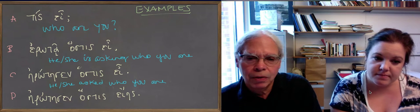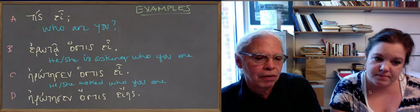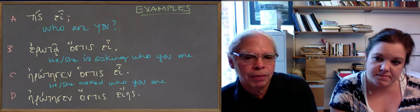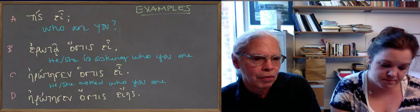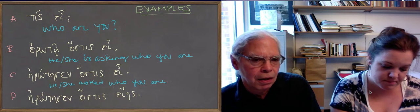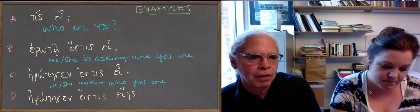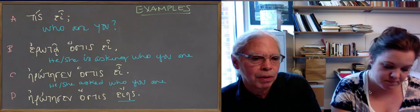But you also have the option in that case of changing the verb to an optative whose aspect is the same as the original direct question. So the direct question verb was ei, so it's going to be present optative. That's present indicative, it's going to be present optative.